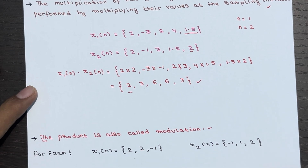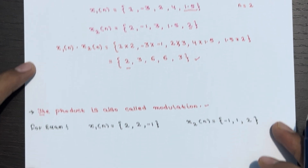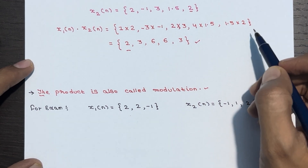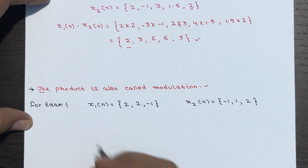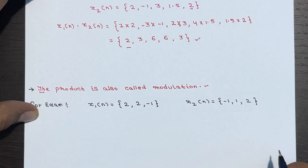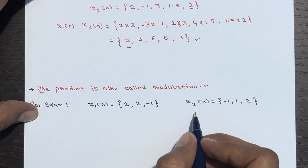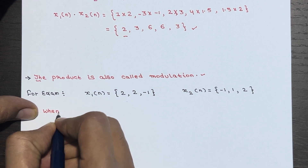The product is also called modulation — it is like combining two signals to create a new modified signal. In an exam, use a more structured approach to solve the problem. X1(n) and X2(n) are given, and you have to calculate y(n), which is the multiplication of the two signals.